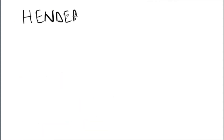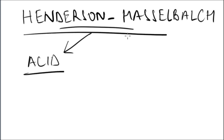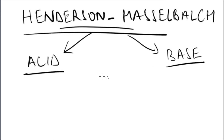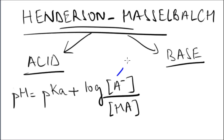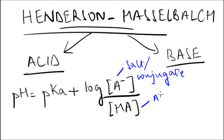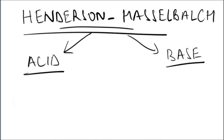Moving on to the Henderson-Hasselbalch equation, which is a very common exam question. We have two forms: one for an acid, one for a base. The purpose is to find the pH. For an acid, pH equals pKa plus the logarithm of the concentration of the conjugate base over the acid. This is for a buffer solution where you have an acid and its conjugate base. If you want to write a negative logarithm, you switch the signs and also switch the ratio, so the acid goes on top and the conjugate on the bottom.